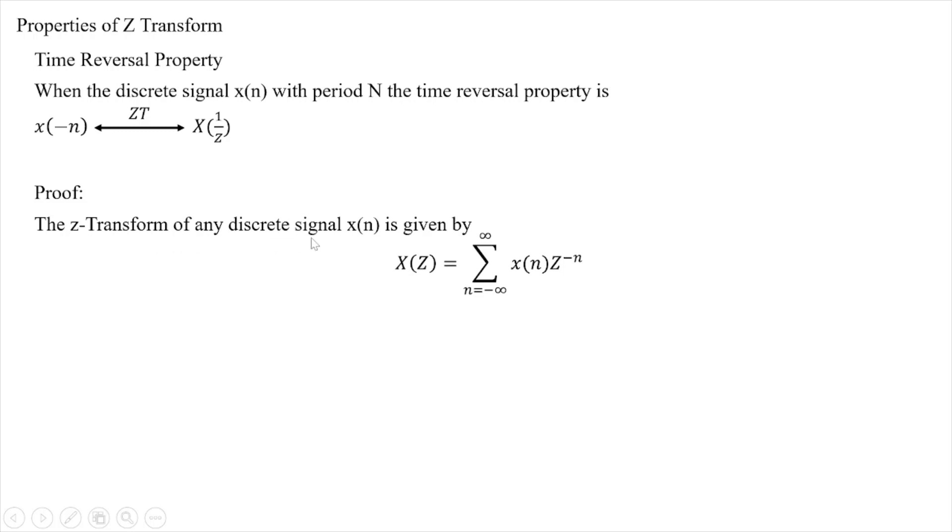Proof: The z-transform of any discrete signal x(n) is given by X(z) equals summation n equals minus infinity to plus infinity of x(n)z^(-n).